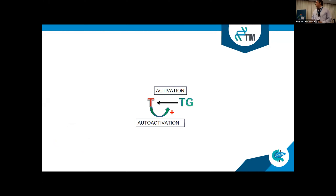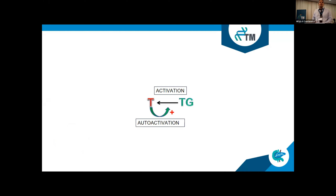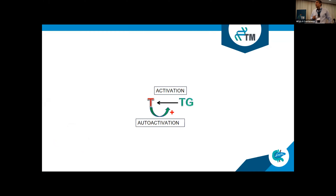As probably all of us know, trypsinogen is a very unique molecule because it can trigger its own activation. This mechanism is called auto-activation, and it is a key mechanism in the development of pancreatitis in almost every case.